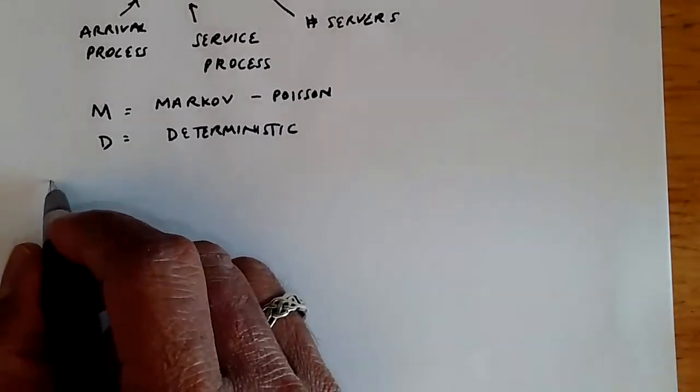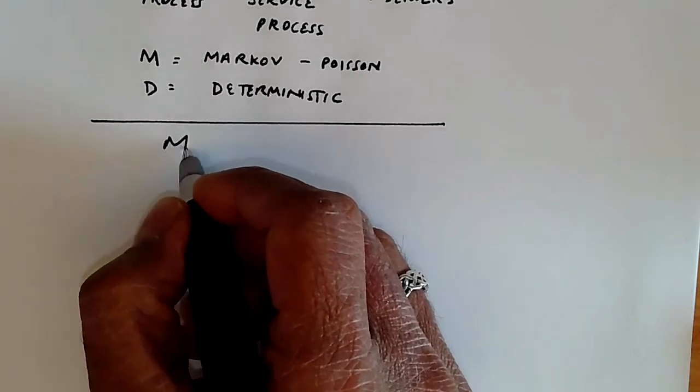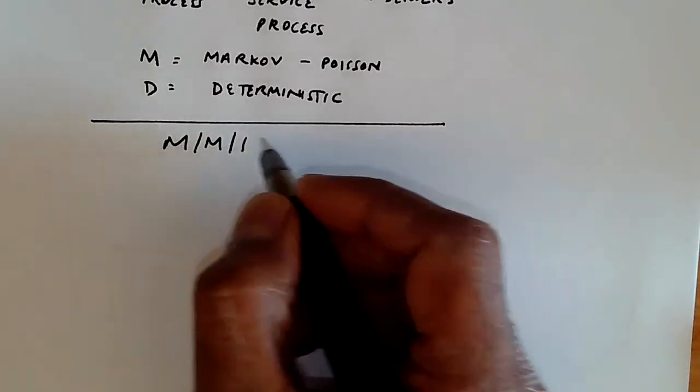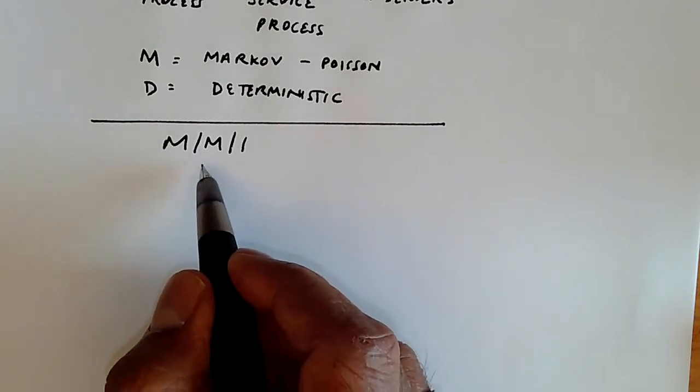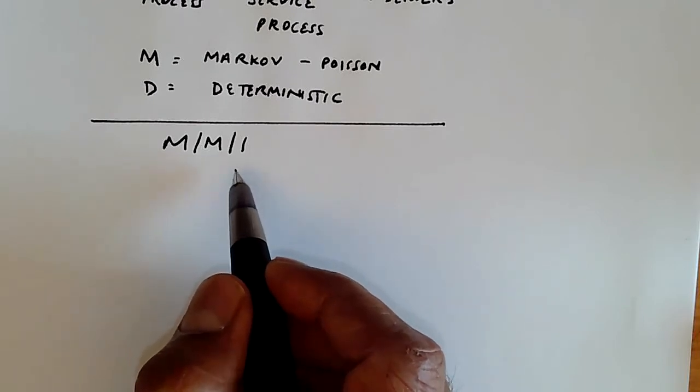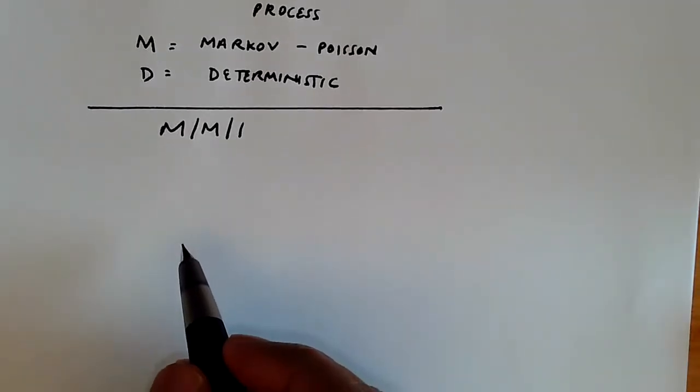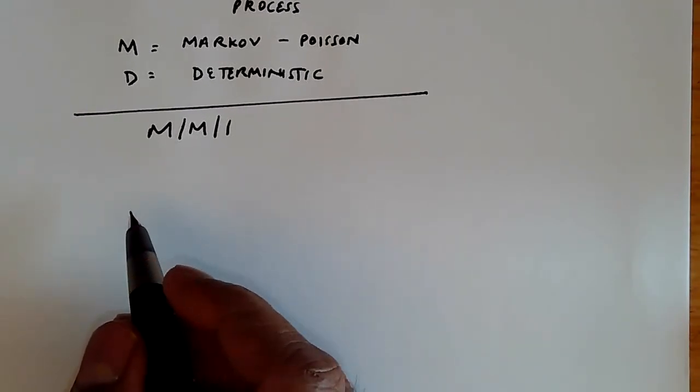So the simplest possible queue is what's called the MM1 queue. That means you have arrivals which are Poisson, the departure is also Poisson but exponentially distributed inter-departure times, and a single server. Understanding this is quite important because this is the foundation for the analysis of more complicated queuing systems.